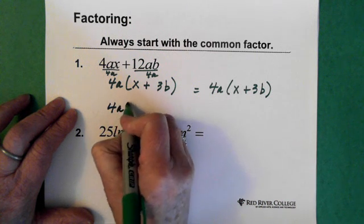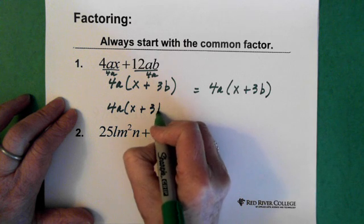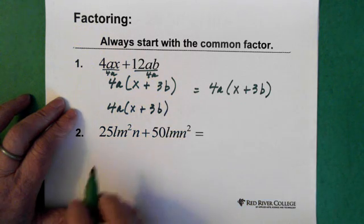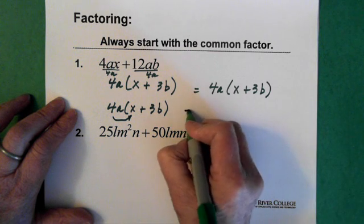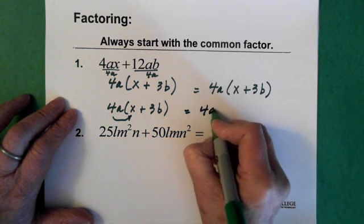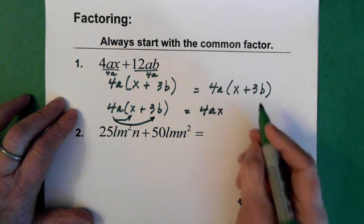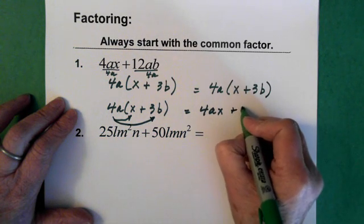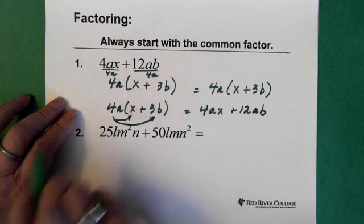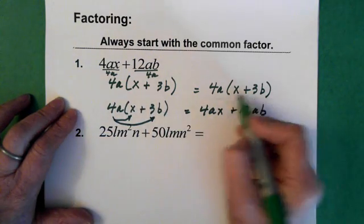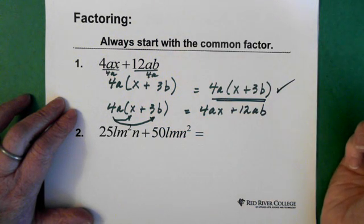So 4A times X plus 3B. And we multiply through, we take the 4A and multiply it by the X, that gives us 4AX, and the 4A times the 3B, which gives us plus 12AB. So we're basically back where we started. So that means that what we have here is correct. Those are the factors.